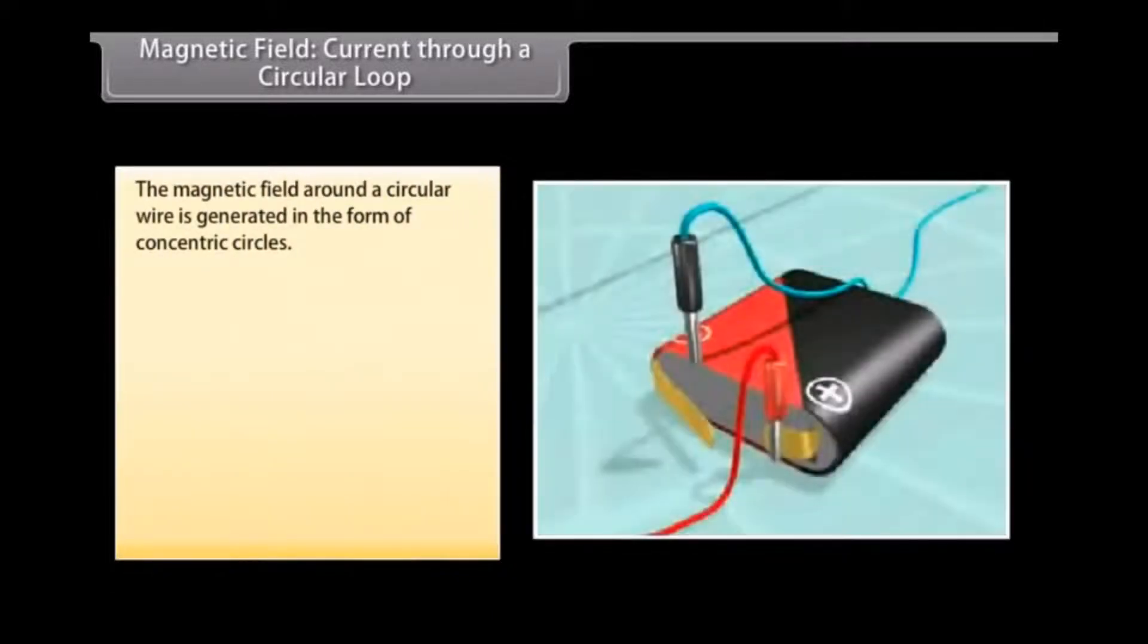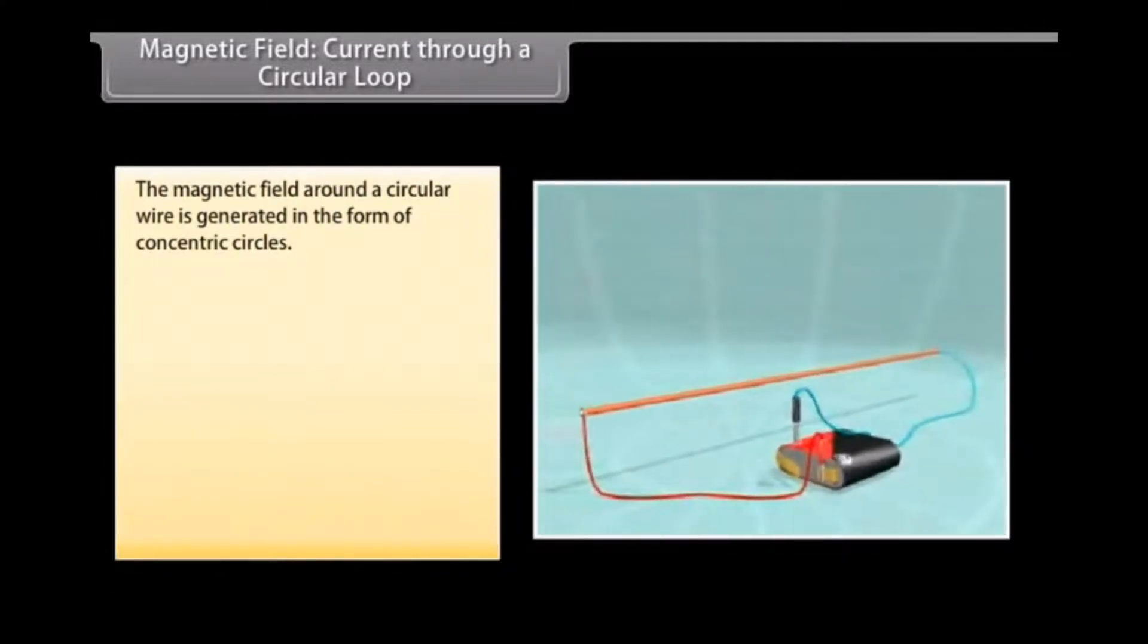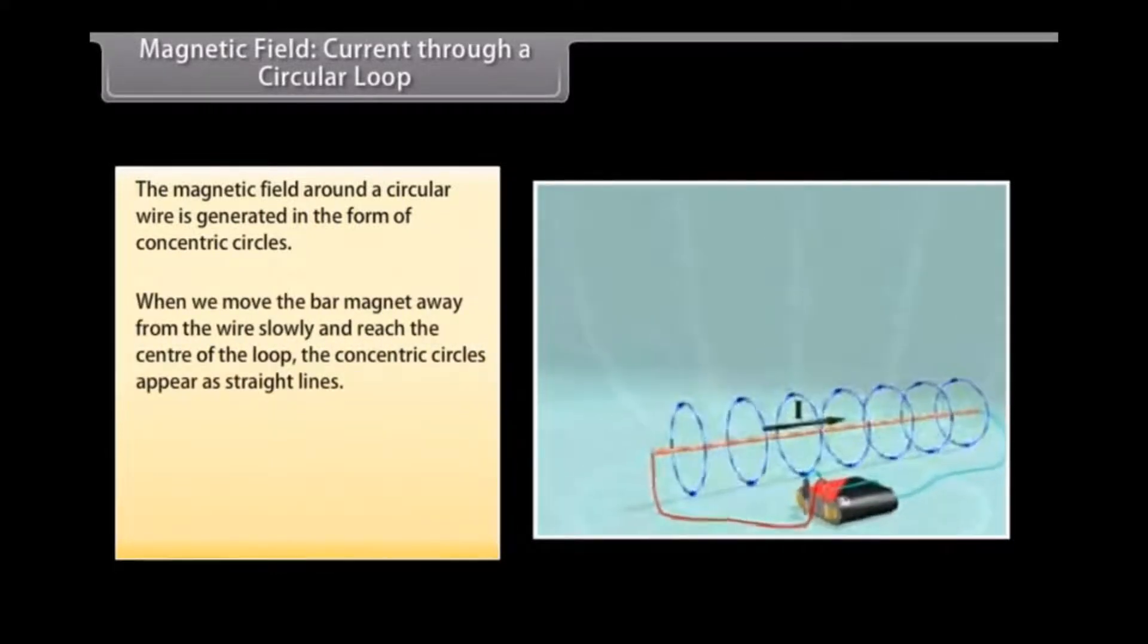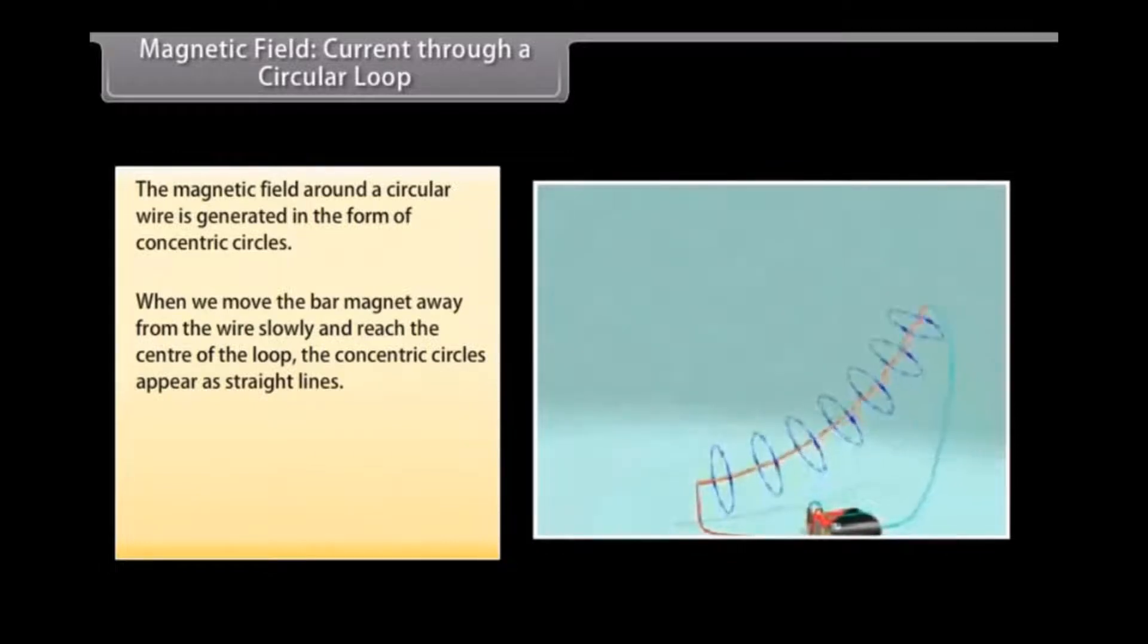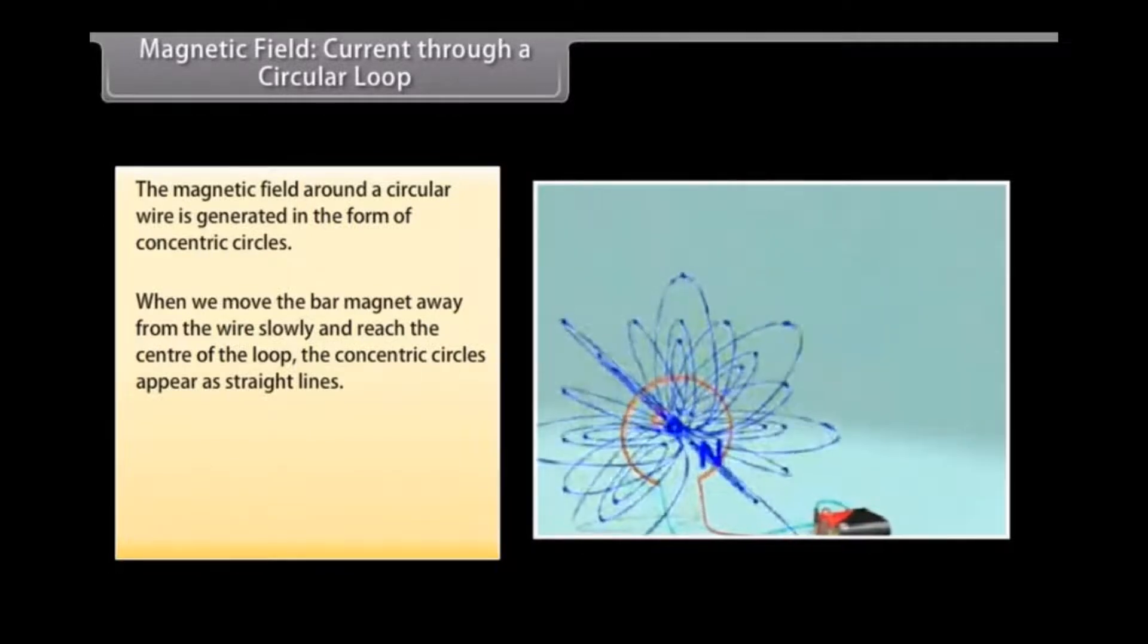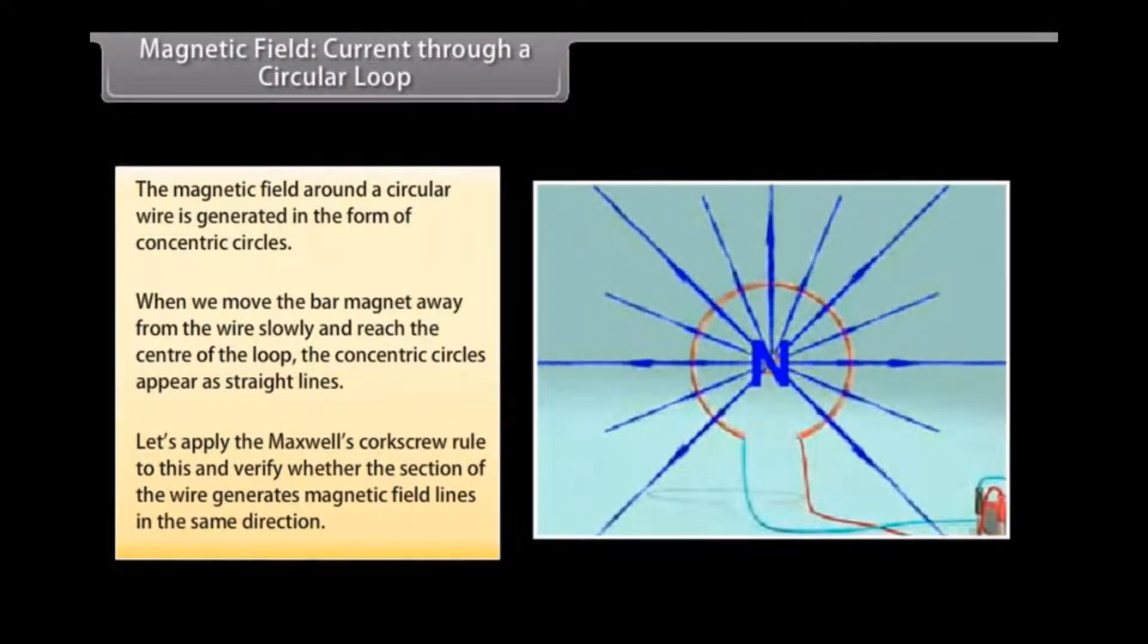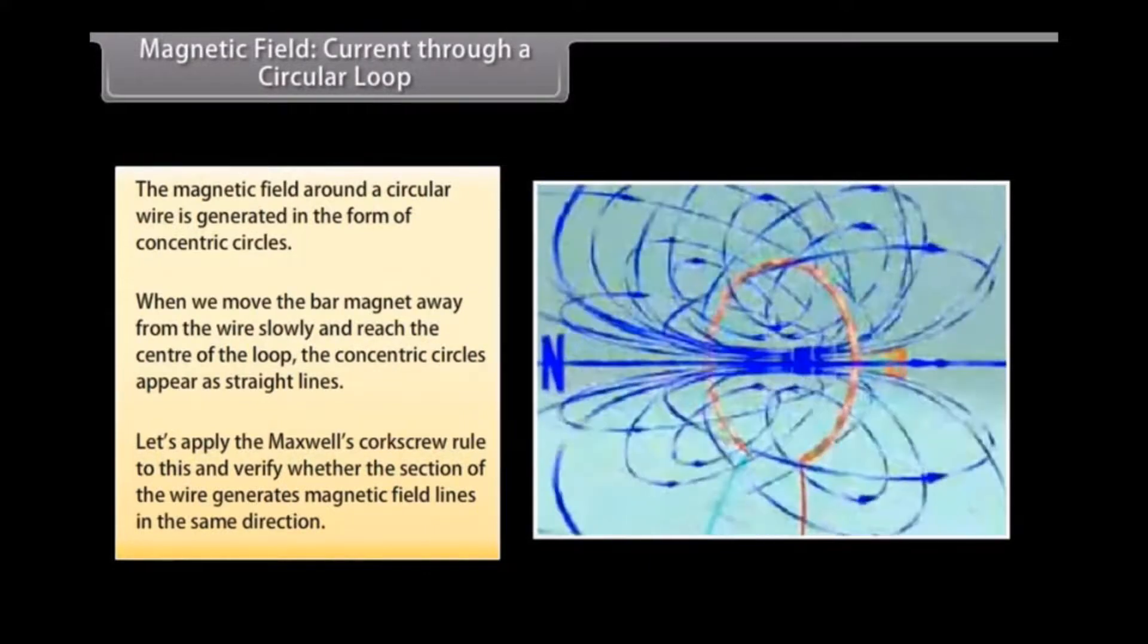Magnetic field current through a circular loop. Let us now look at what happens when the wire through which we passed the current is placed in a circular manner. The magnetic field around it is generated in the form of concentric circles. Try moving the bar magnet away from the wire slowly. By the time we reach the center of the loop, the concentric circles appear as straight lines. The entire magnetic field appears as a straight line. Now try applying Maxwell's Cork Screw Rule to this and check whether every section of the wire is able to generate magnetic field lines in the same direction.